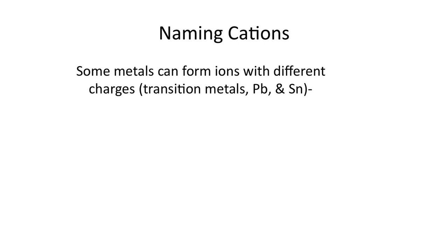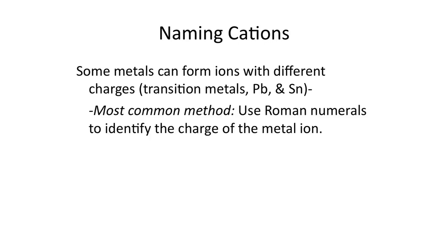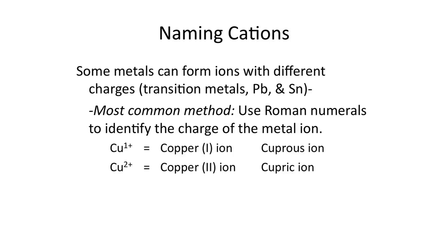Elements that can form ions with different charges are usually the transition metals, lead, and tin. The ones you can exclude from this group would be silver, which always forms ions with a charge of plus 1; zinc, which always forms ions with a charge of plus 2; and cadmium, which always forms ions with a charge of plus 2 as well. When you have one of these metals in your compound, you need to distinguish the specific ion in your formula. The most commonly used method is to use Roman numerals in the name to identify the charge of the metal ion.